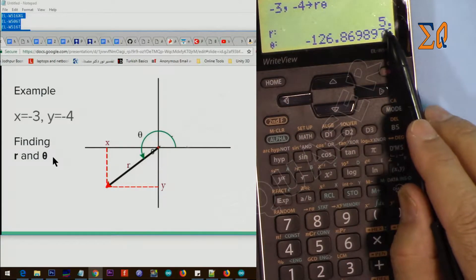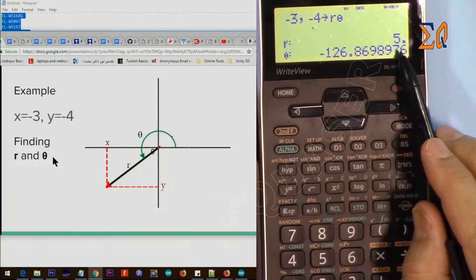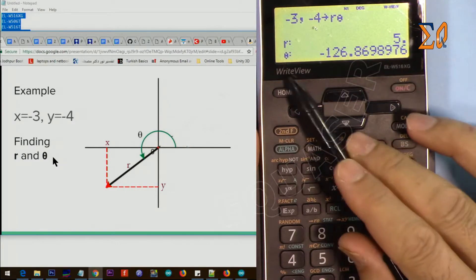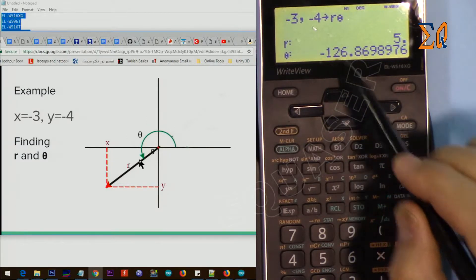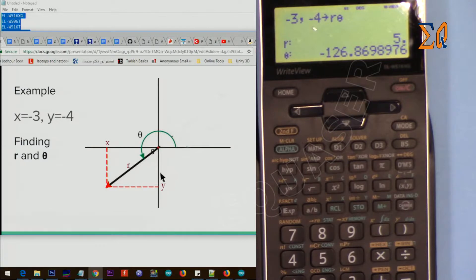Now it shows that r is 5, and theta is minus 126. Here is a problem that we want to find that angle from this way, but this gives us minus 126, which means it has been calculated here.